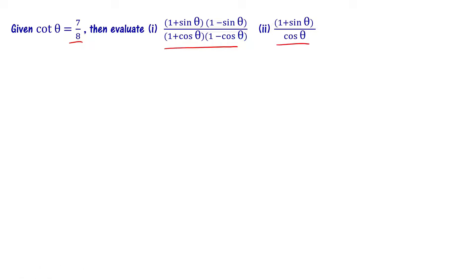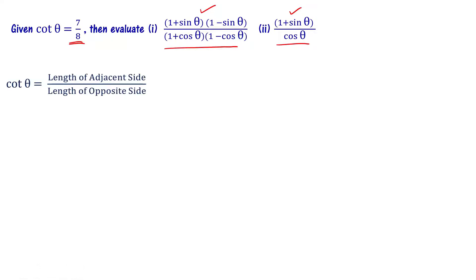For this problem, cot theta is given as 7 by 8. Cot theta means length of adjacent side to theta divided by length of opposite side to theta. So the adjacent side is 7 and the opposite side is 8 in the right angle triangle.